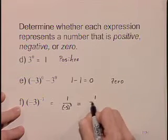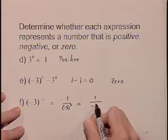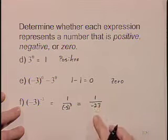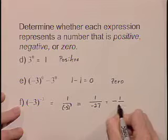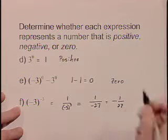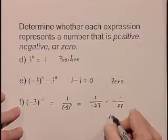Simplifying that a little more, we'll have 1 over negative 27. We could rewrite this as a fraction of negative 1 over 27 and label it a negative number.